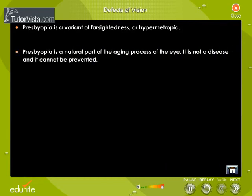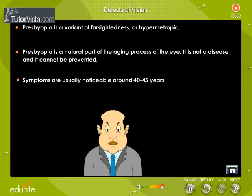Presbyopia is a natural part of the aging process of the eye. It is not a disease and it cannot be prevented. Symptoms are usually noticeable around 40–45 years.